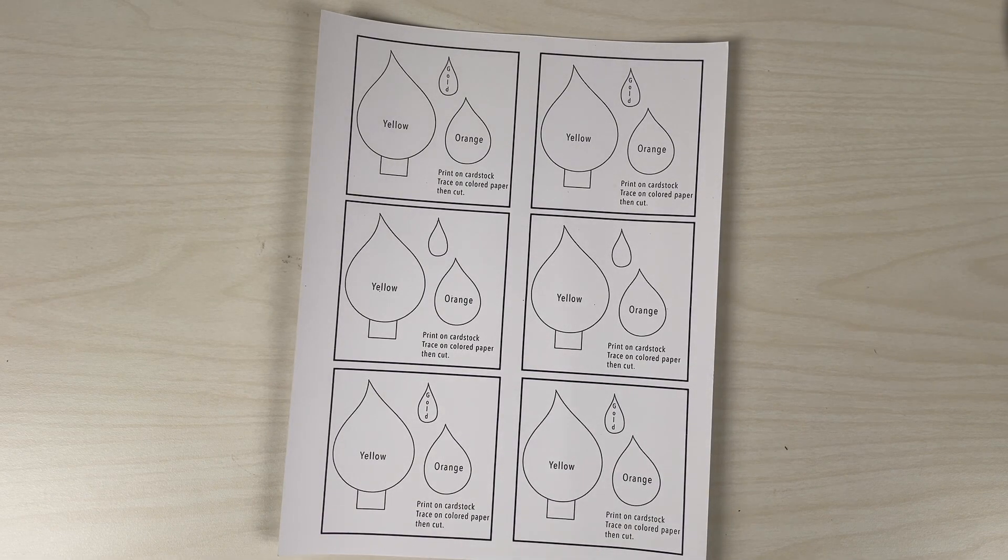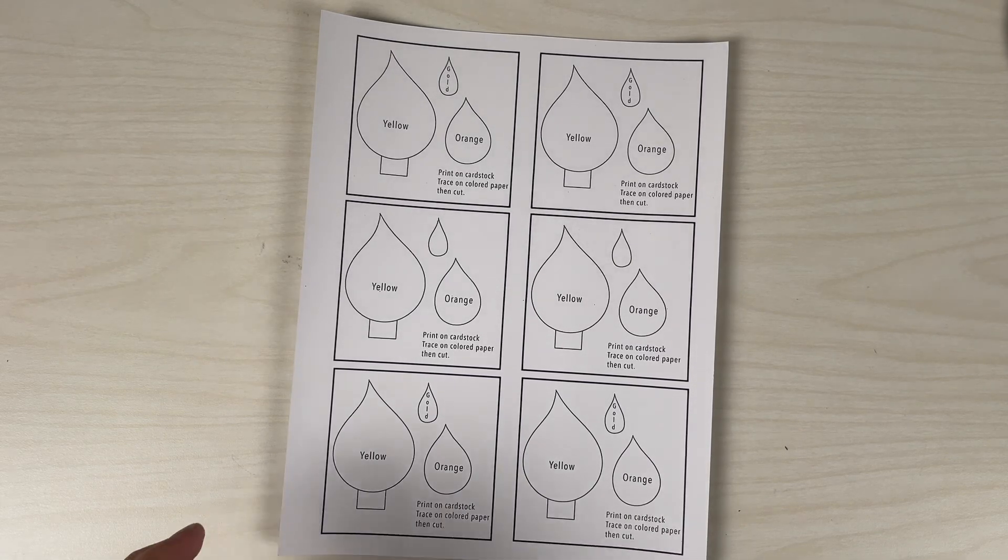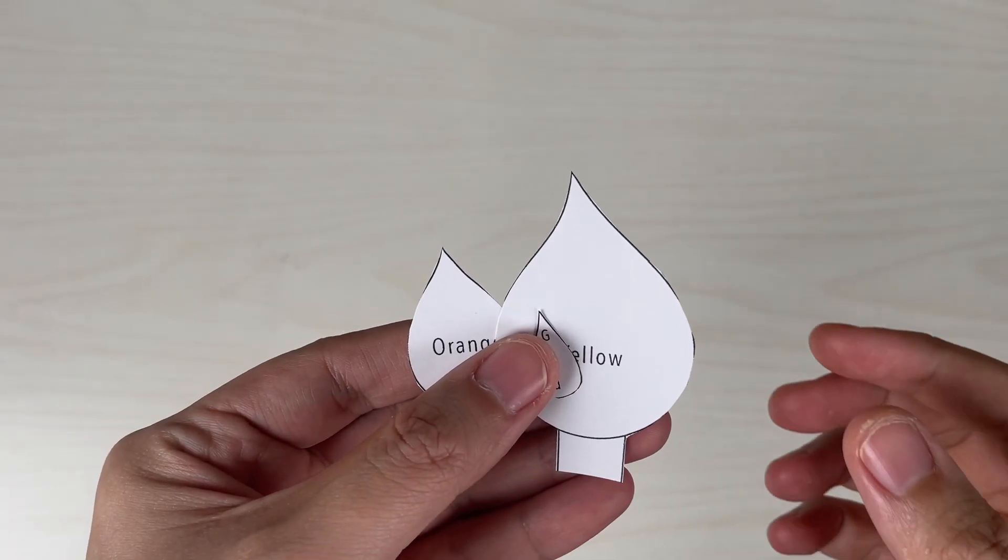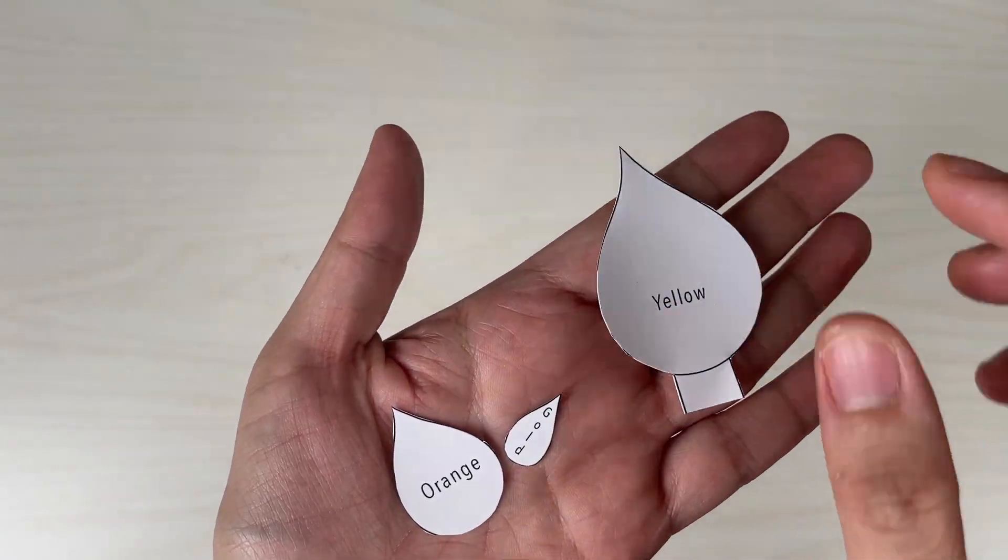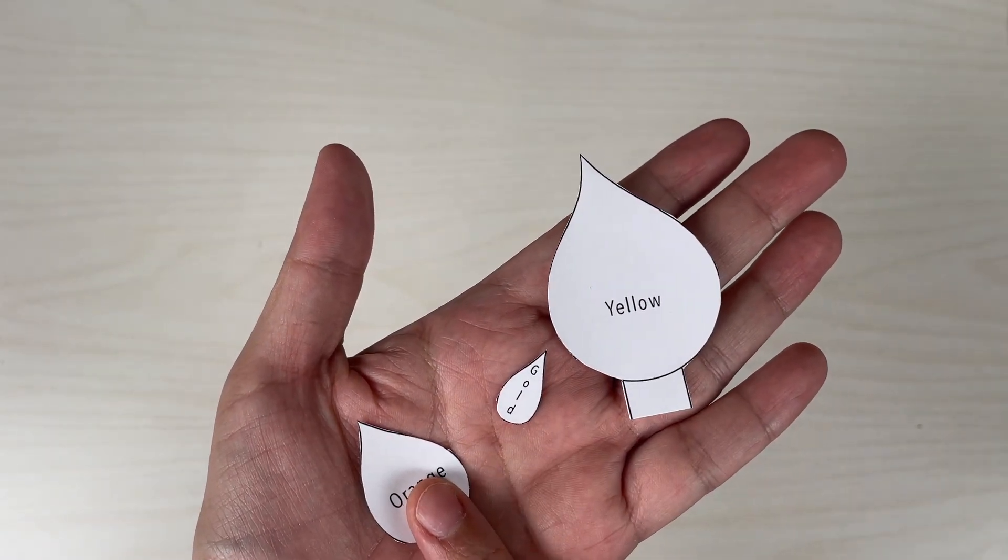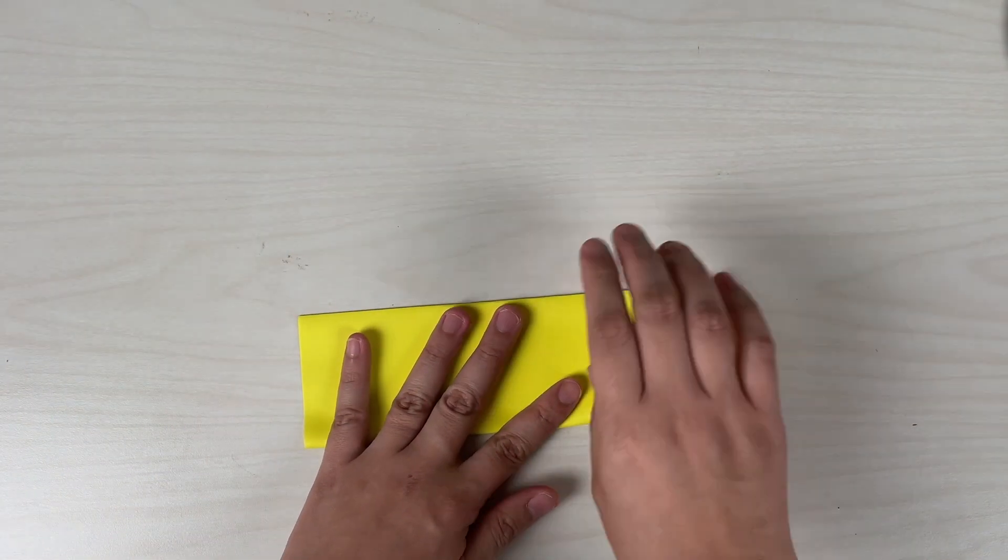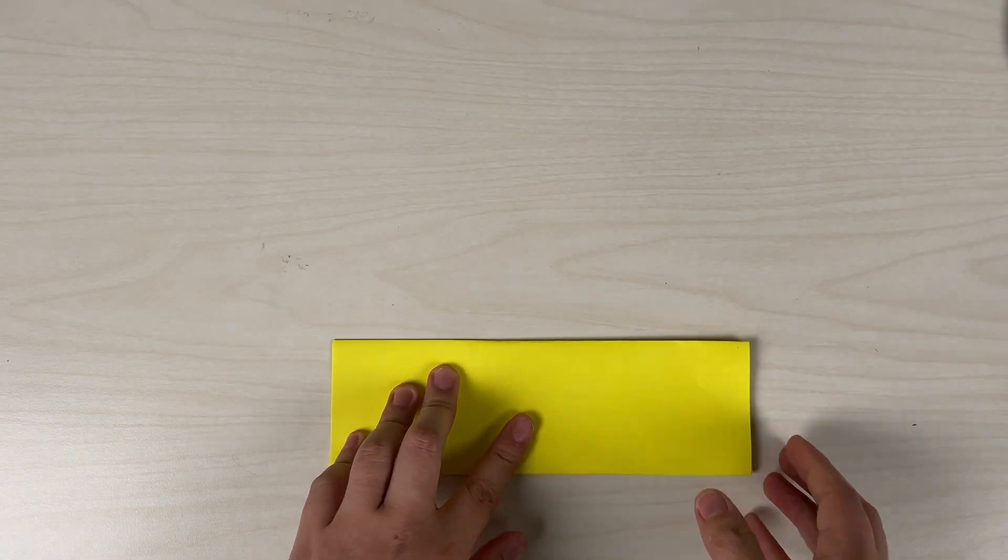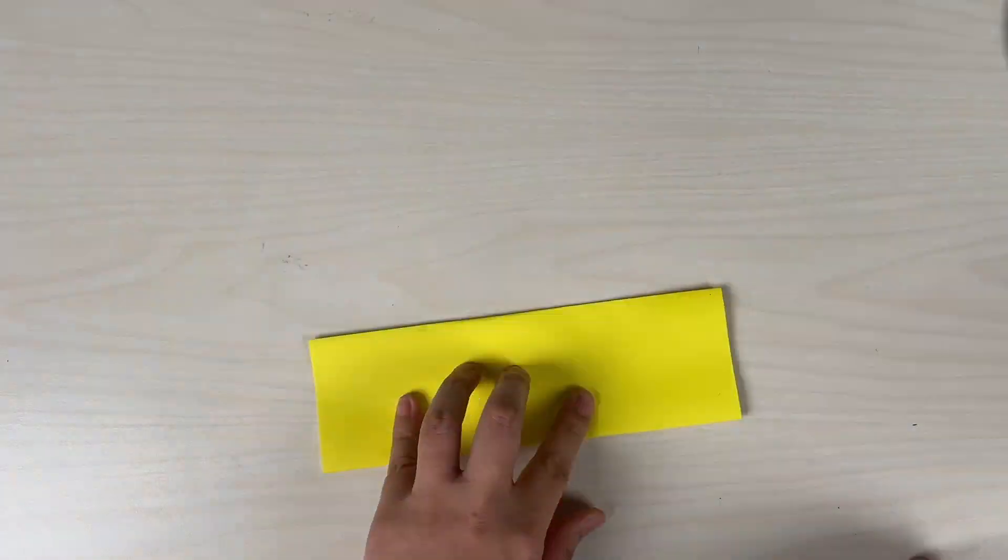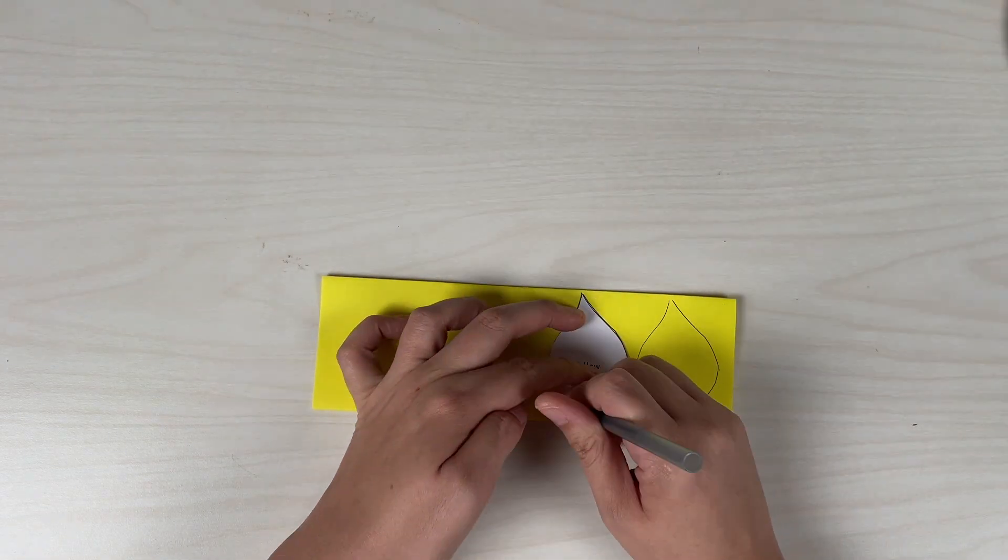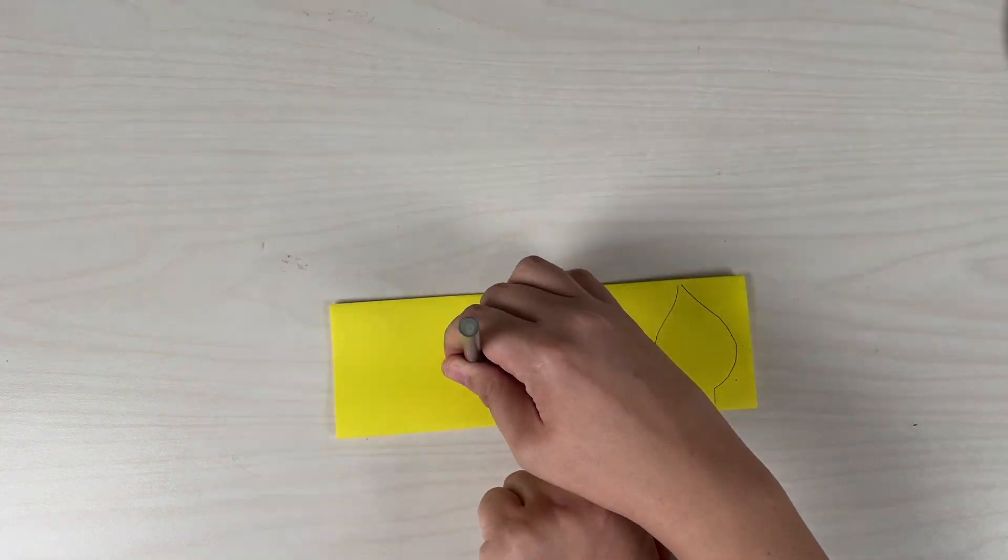Now to prepare this craft, first take the template and cut. So the templates will be again a big flame, a medium flame and a small flame for yellow, orange and gold. Now let's start with the biggest flame which we will be cutting from the yellow paper. To make your jobs faster, just fold the yellow paper and then trace the big flame with the flap, and then you can cut the pieces all at once.